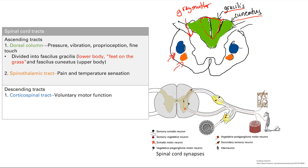You get synapses in the gray matter because that's where the cell bodies are, and then the axons travel out. The axons also travel down the spinal cord in the white matter. The inside of the spinal cord is gray matter and the outside is white matter.